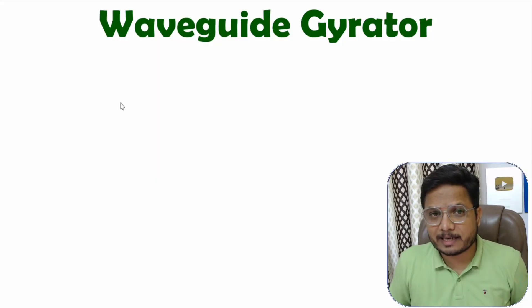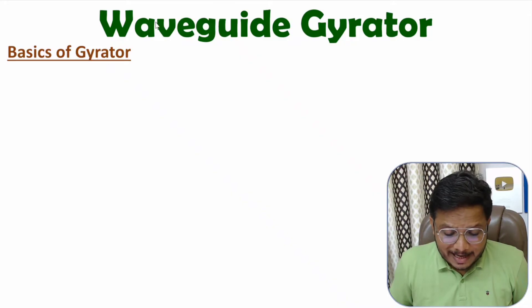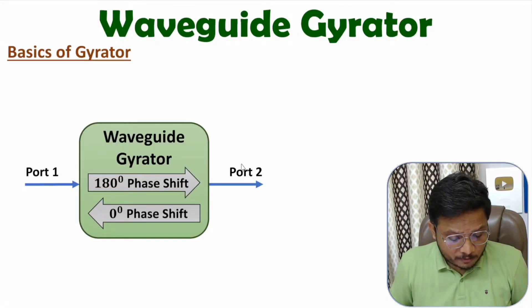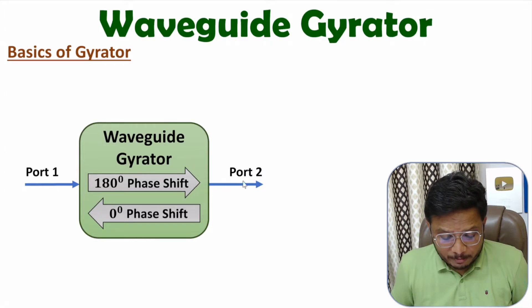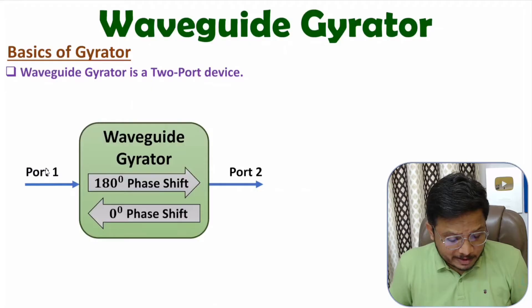The waveguide gyrator is a two-port device — here we have port 1 and here we have port 2. Its working is based on phase shift. If you provide input at port 1, then at the output of port 2, we will have a 180-degree phase shift. And if you provide input at port 2, then at port 1, the output has zero-degree phase shift.